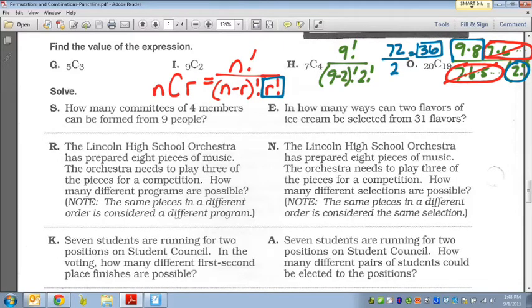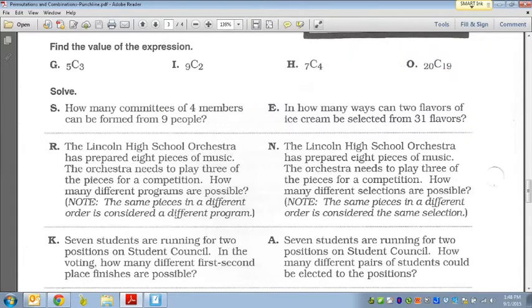So we did one of those at the top. Let's go ahead and take a look here at the bottom. Specifically, I want to take a look at R and N. So letter R, the Lincoln high school orchestra has prepared eight pieces of music. The orchestra needs to play three of the pieces for a competition. How many different programs are possible? Now looking at this information, it just says needs to play three. It doesn't say it needs to be in a particular order. It doesn't say they can't repeat. Except look at the note. Look at the note down at the bottom. Super important. So it says the same pieces in a different order is considered a different program.